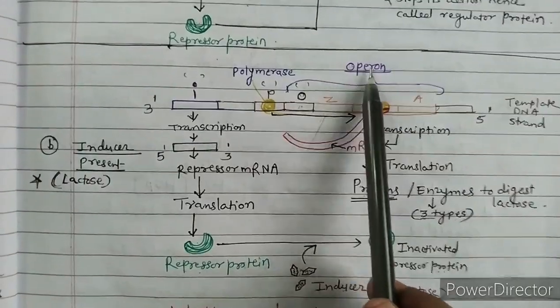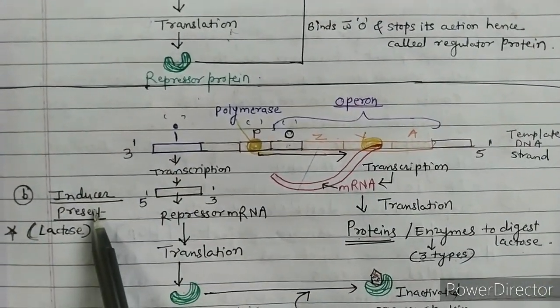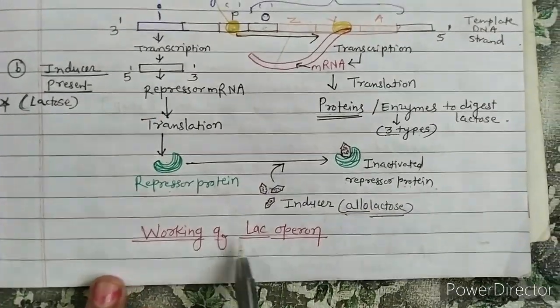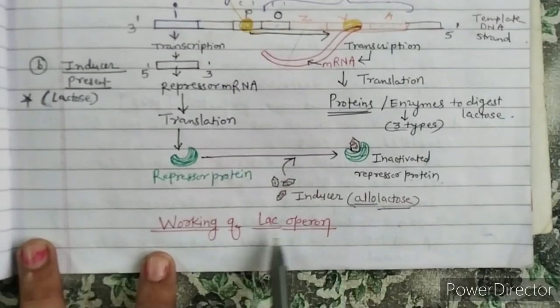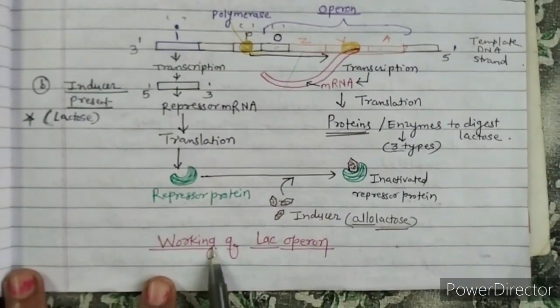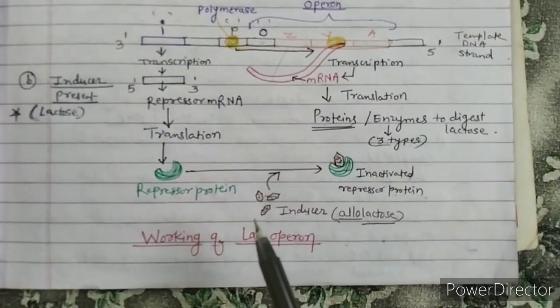In this way, the lactose is digested by the lac operon in the E. coli bacteria. So all this is about the working of the lac operon. The lac operon's function is to digest the lactose type of sugar or disaccharide. Okay students, goodbye.